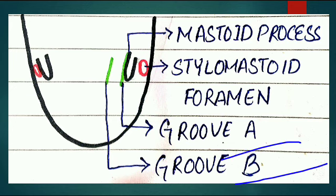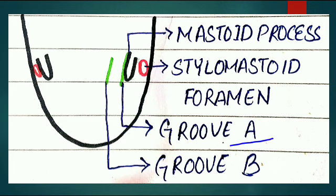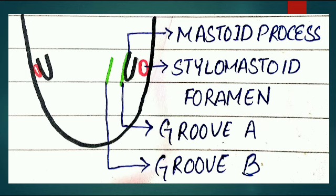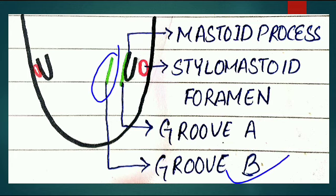There are two grooves present in front of the mastoid process. Groove A lies medial to the mastoid process and is called the mastoid groove - it gives attachment to the posterior belly of the digastric muscle. This is a very important question with a high chance of appearing in NEET MDS exams as an MCQ. Groove B is for the occipital artery.